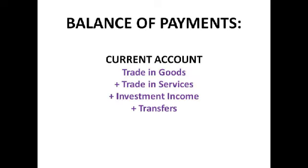So what makes up the current account? The current account is trading goods plus trading services plus investment income plus transfers. Trading goods is the export of goods — tangible things like a mouse, a phone, a phone charger — also called visible exports, minus the imports of all of these goods. Trading services is the exports of services minus the imports of services. Services is anything intangible or invisible, so education, tourism — big examples — and financial services in the UK.